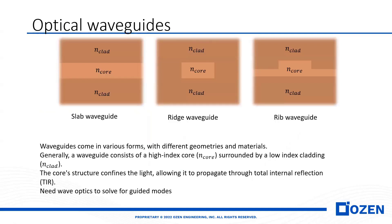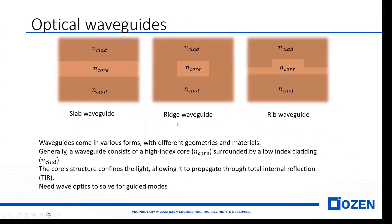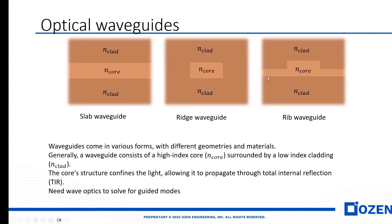Waveguides come in various forms with different geometry and material. In this picture, we have a slab waveguide, a rib waveguide, and a ridge waveguide. The main principle in these waveguides is that the refractive index of the core is larger than the cladding. The mechanism of light propagation through the waveguide is based on TIR, or total internal reflection.